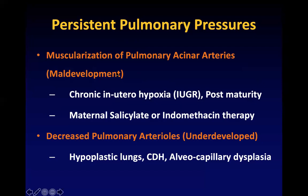The second type of PPHN is maldevelopment of pulmonary vessels. The vessels are maldeveloped due to chronic in utero hypoxia in IUGR babies, post-mature babies, or chronic maternal use of aspirin or indomethacin. The muscle layer in the pulmonary arteries becomes thick, leading to failure of vasodilation immediately after birth. The third type is a decreased number of blood vessels — underdeveloped pulmonary vasculature — which occurs in hypoplastic lungs, CDH, or alveolar capillary dysplasia.